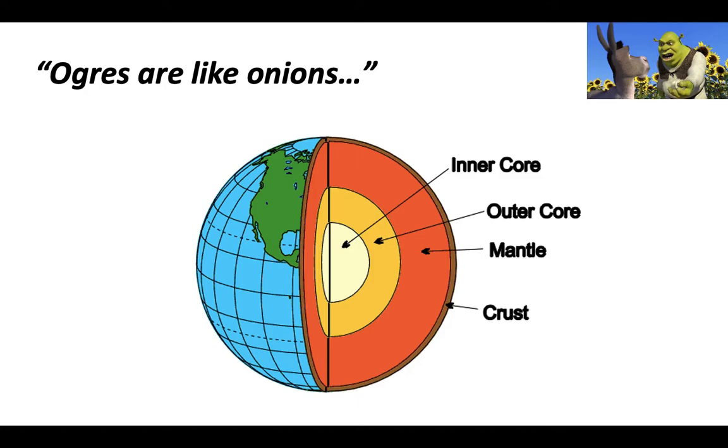So first of all, it's important for you to know that the great philosopher Shrek once said, ogres are like onions, they have layers. And what I think we all know deep down is it's really a metaphor talking about the layers of the Earth. The point is, Earth has layers, right? Just like an onion, just like ogres.